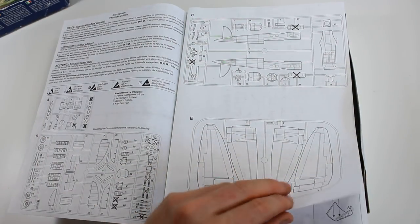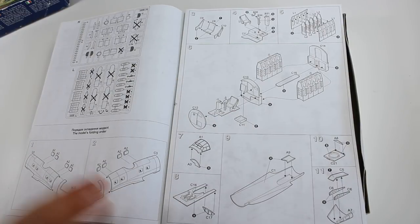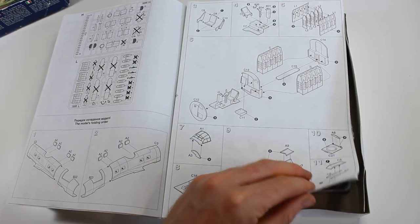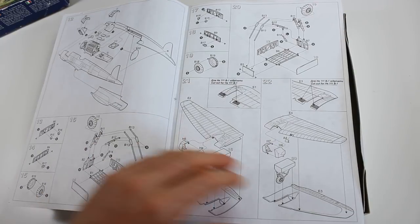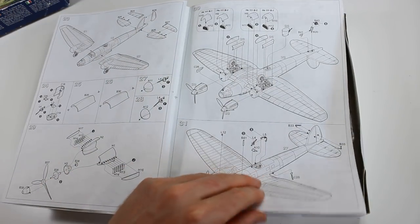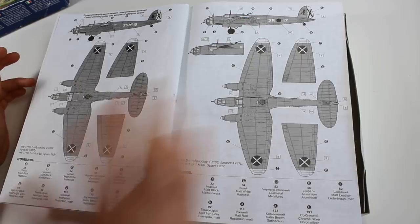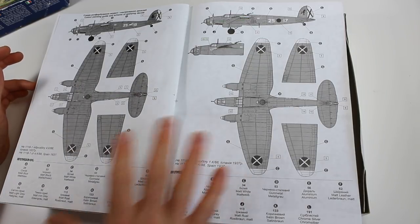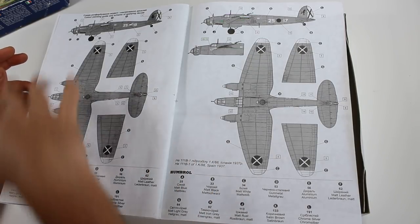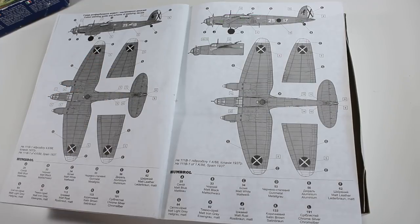Typical, if you've ever seen a Roden kit, it is slightly agricultural, although the instructions, there's nothing wrong with these, as you can see. They're very open, descriptive, very well explained and laid out. No issues as you're going through here. Then you've got the marking options, so you've got two Spanish Civil War ones from the Legion Condor, in an overall grey. It's grey all over, even from the underside as well. So this would be sort of RLM 63 type colour.